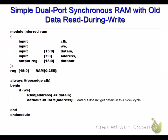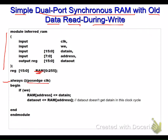Let us look at a simple dual-port synchronous RAM example with old data read during write. We already know how to write all the inputs and outputs. We have an always block on positive edge clock. The RAM is defined as 16-bit width with 256 slots. Inside the always block, we check write enable and then have two key lines of code.